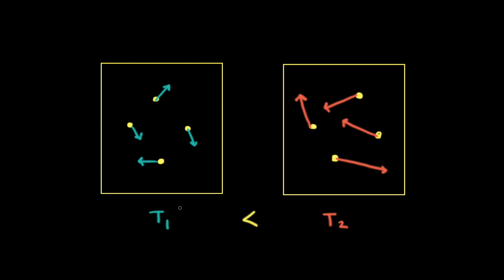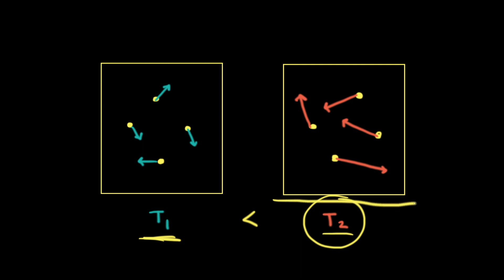Let's say we have two samples of helium gas. One sample is at temperature T1 and the other is at temperature T2. If T2 is greater than T1, that means on average the particles of helium gas in the second box are moving faster than the particles in the first box. We can tell the particles in the second box are moving faster because on average the length of the arrows indicating the velocity vector in the box on the right are longer than the arrows in the first box.